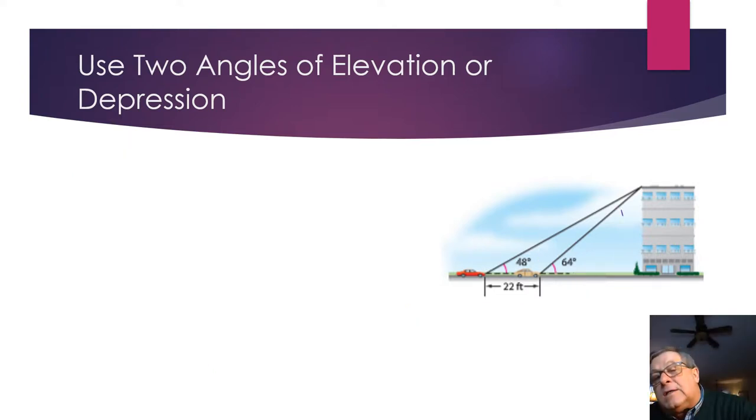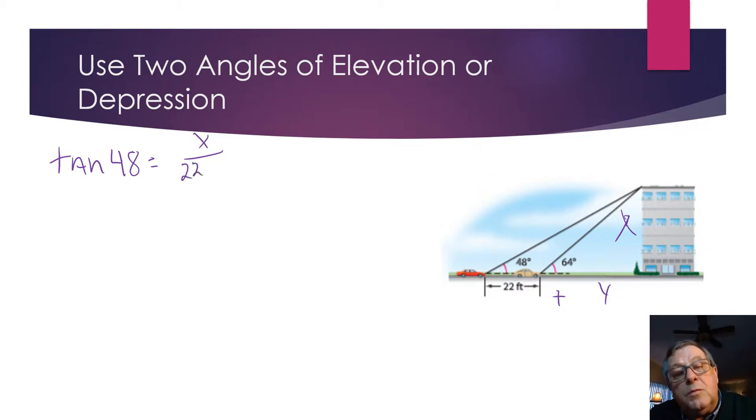Let's go to the next slide so we've got a little bit more room to work. So again, this is X. This is Y. Now, if I'm looking at my angle of elevation of 48 degrees, the distance from the first car to the building is going to be 22 plus Y, correct? And again, we've still got a tangent function. So we've got the tangent of 48 equals X over 22 plus Y, the opposite side.